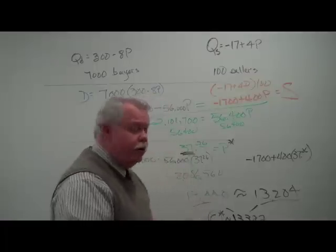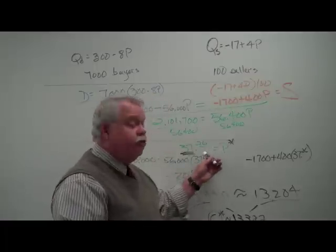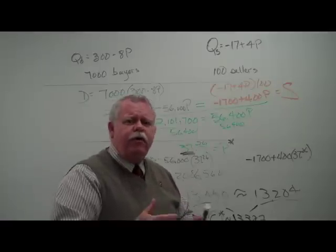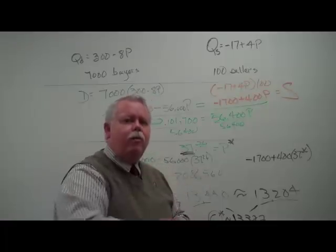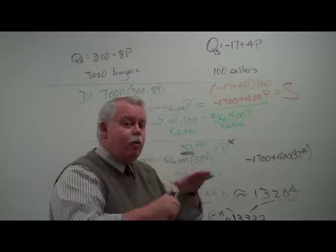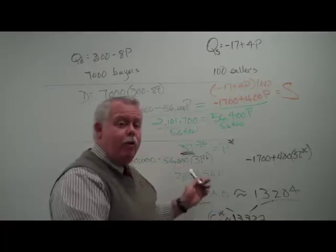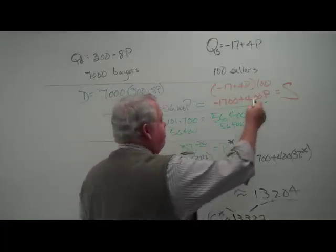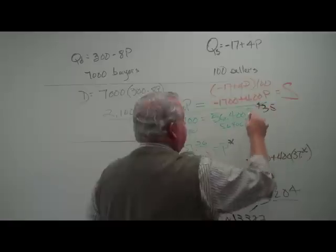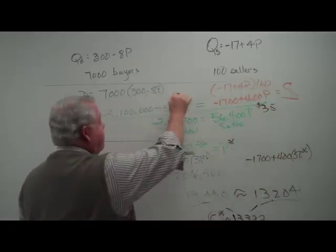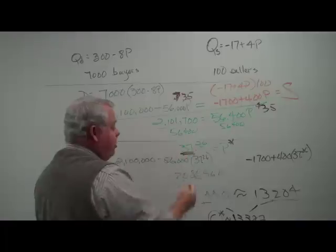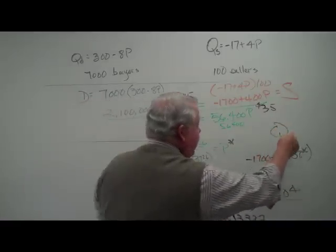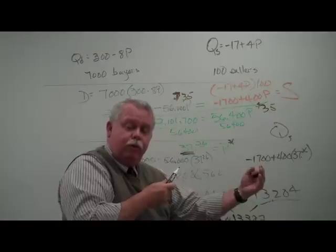Another variation here is to look at this and say, if the equilibrium price is $37.26, what would happen if we imposed a price ceiling of only $35? Well, we know when the price ceiling is below equilibrium, we're going to have a shortage. But now we can actually calculate the approximate size of the shortage. We would take the $35 and plug it in on this side and this side. We would get a quantity demanded and quantity supplied. The difference between those two would be the shortage.